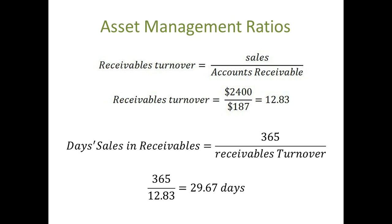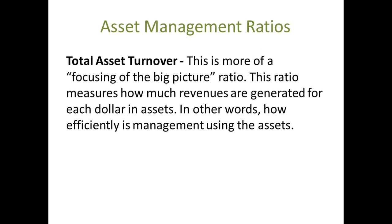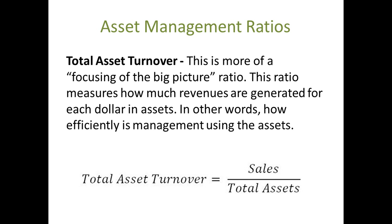Total Asset Turnover. This is more of a focusing on the big picture type of ratio. This ratio measures how much revenues are generated for each dollar in assets. In other words, how efficiently is management using the assets. The Total Asset Turnover Ratio is calculated by Sales divided by Total Assets.